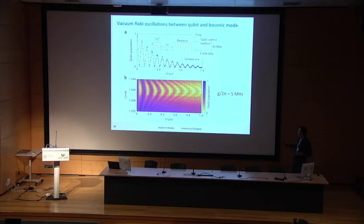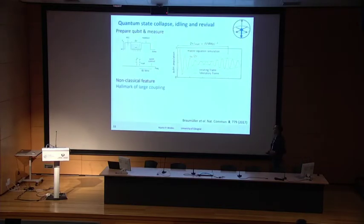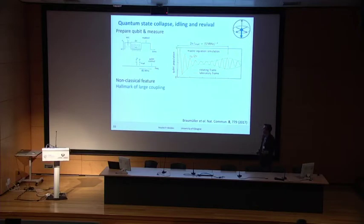These oscillations correspond to iSWAP-like exchanges of one quantum between the systems. From the oscillation frequency we can determine the coupling strength, which is 5 MHz for this geometrically defined coupling between qubit and resonator.